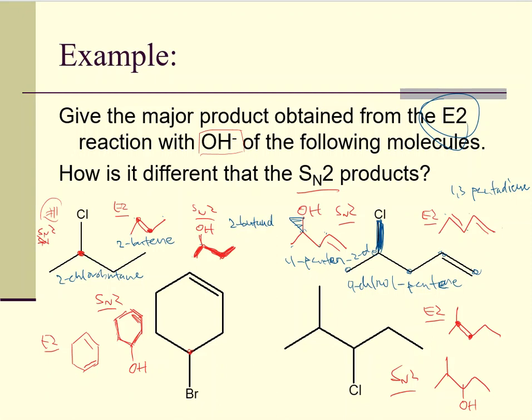This is the example problem we ended with in the last video. We've really only focused on E2, and that example problem focused on elimination bimolecular. But there's also E1, and we have to worry about it the whole time just like we do SN2 and SN1. I haven't introduced it yet, and that's what I'm going to be doing in this video — discussing how E1 is different and figuring out which way we can direct these reactions.